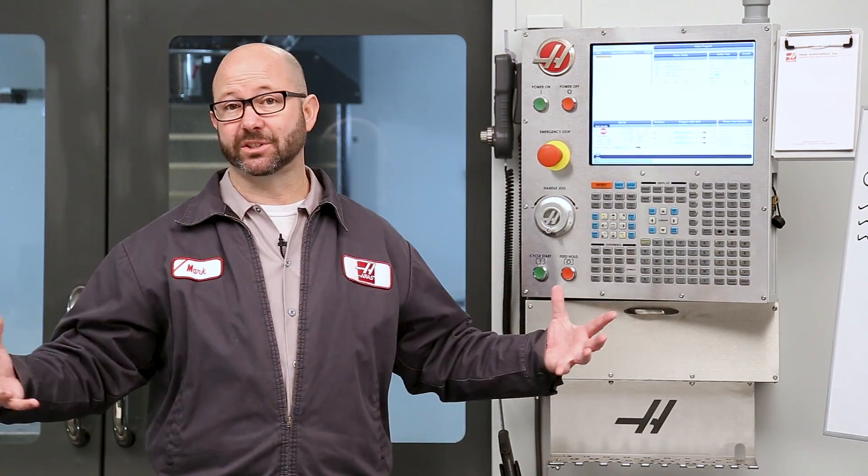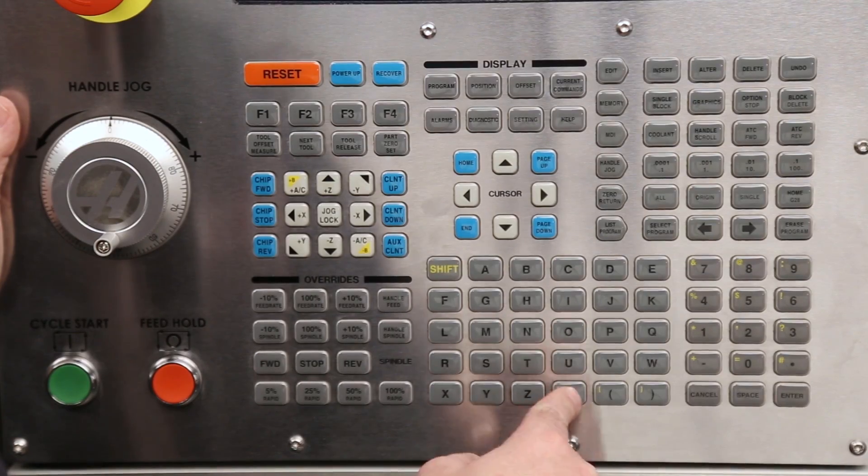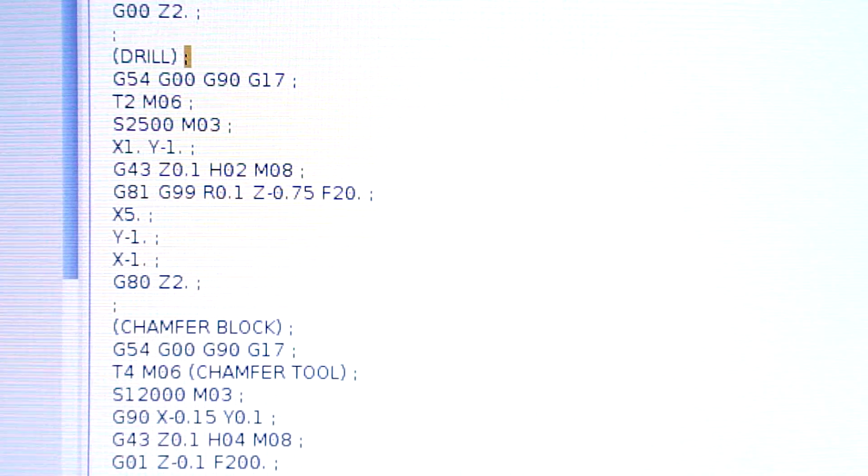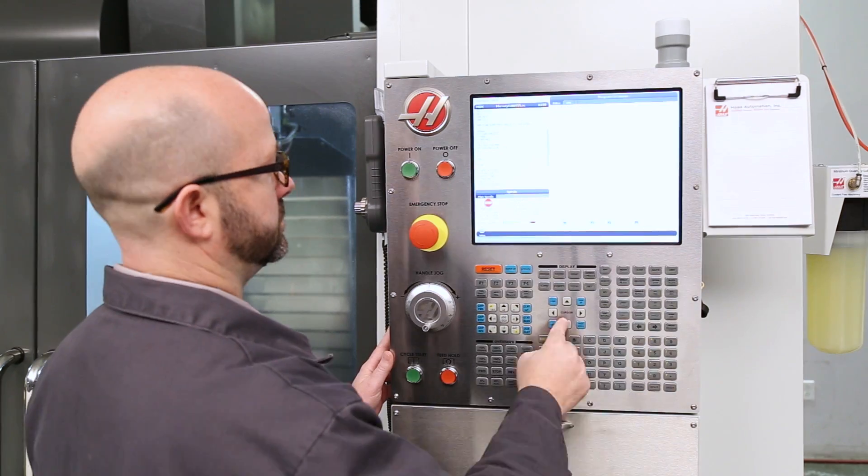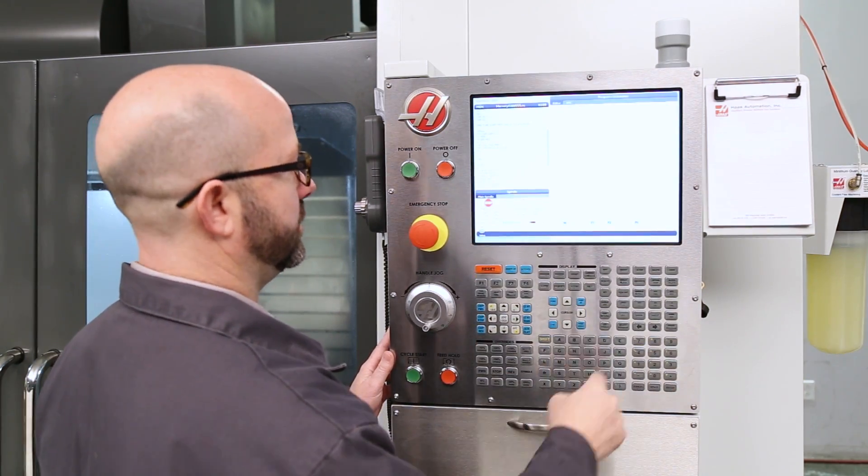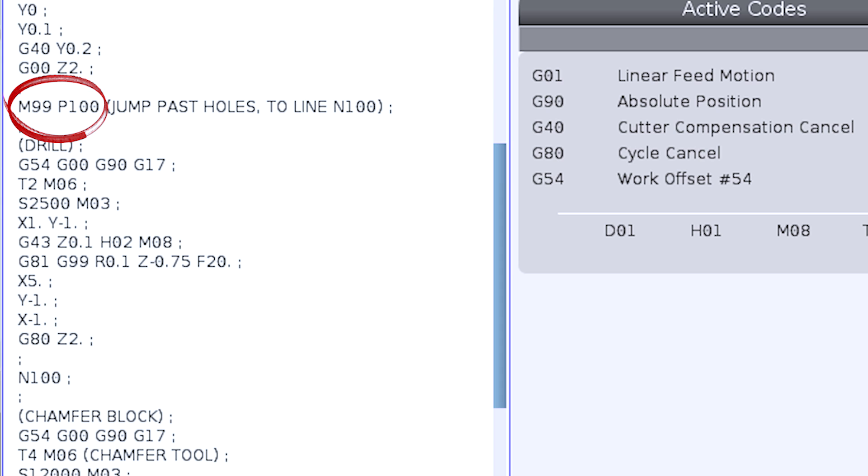Now, if I wanted to jump over hundreds or even thousands of lines of code, I wouldn't want to spend the time to add hundreds or thousands of forward slashes to my program. That would take a long time. In that case, I'd add an M99 with a P number and label the line I'd like to jump to with a corresponding N number. M99 P100 would then jump to my line N100.